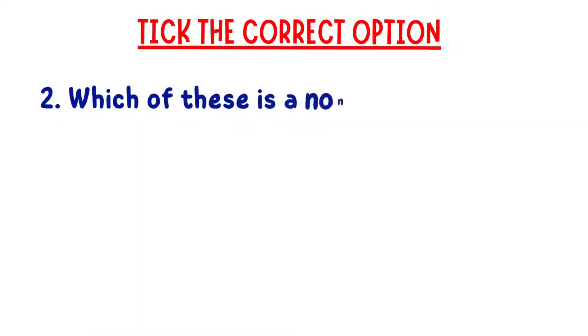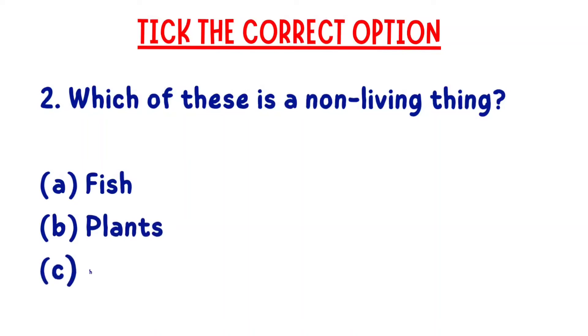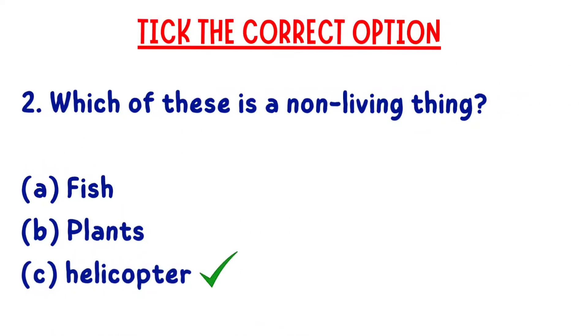Second, which of these is a non-living thing? A: fish, B: plants, C: helicopter. The right answer is helicopter.